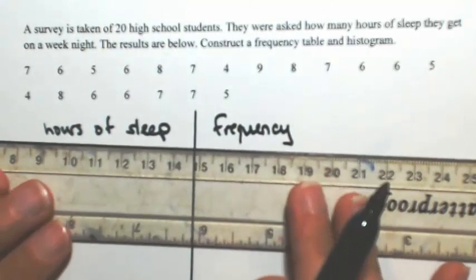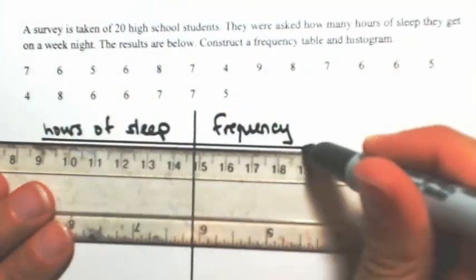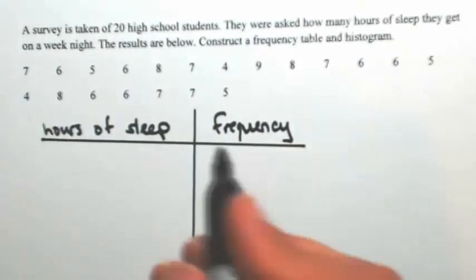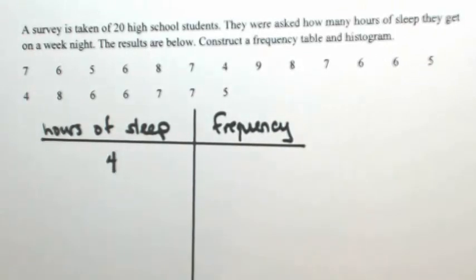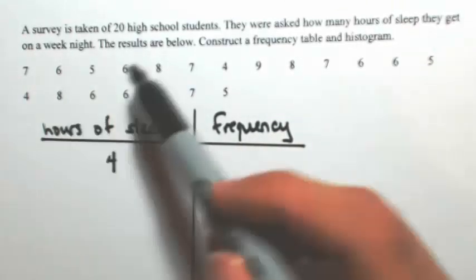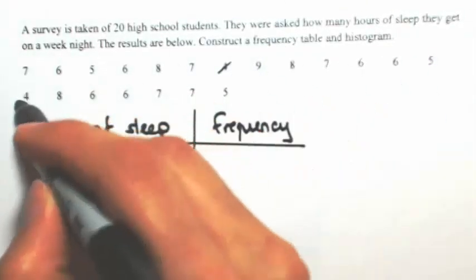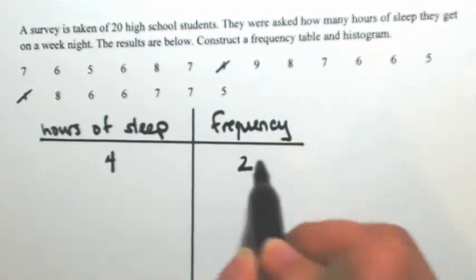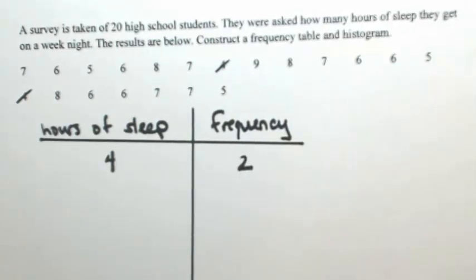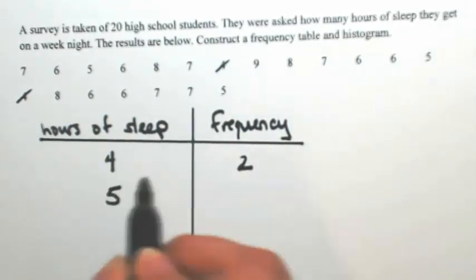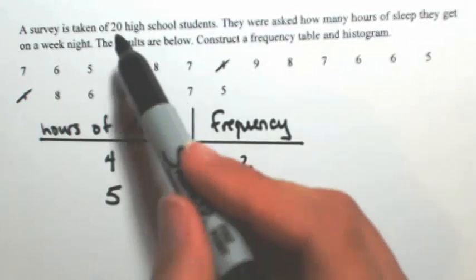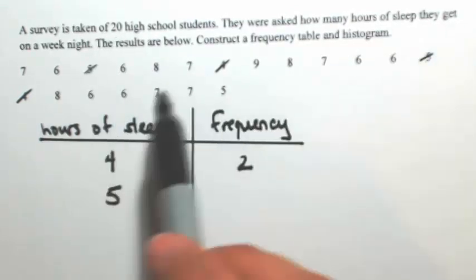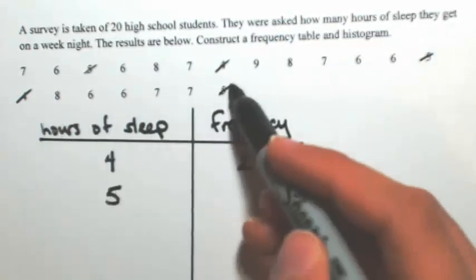Just setting up the table here. The smallest number was 4, and 4 appeared twice, so 4 has a frequency of 2. The next number is 5, and that appeared 1, 2, 3 times.